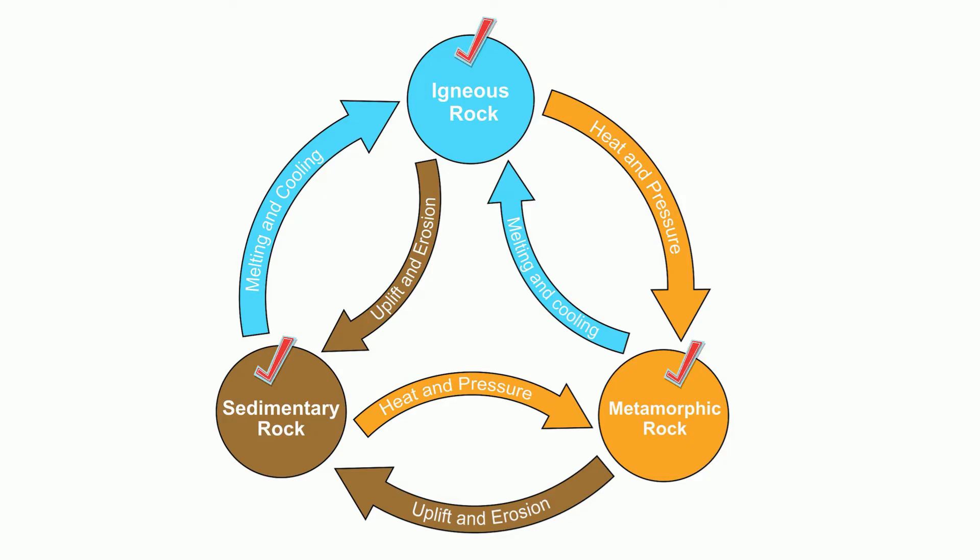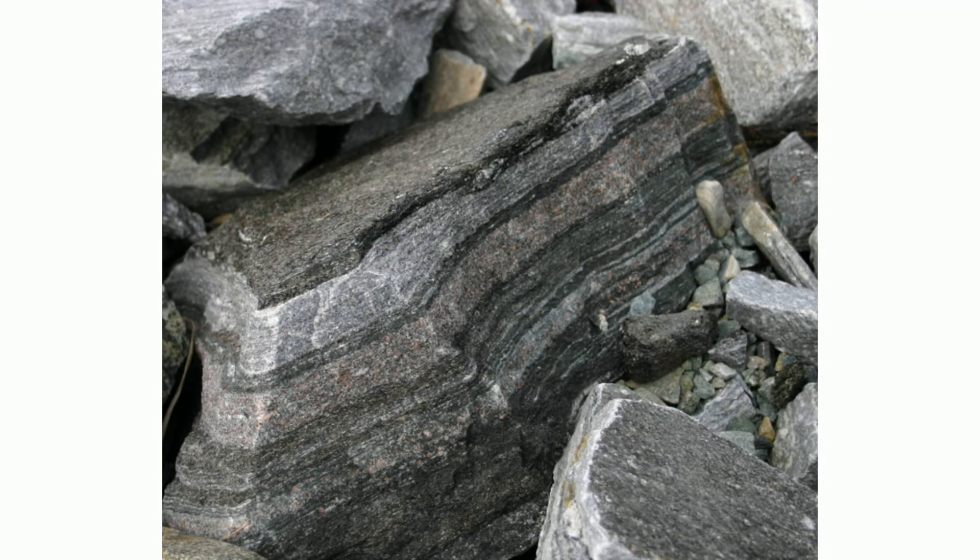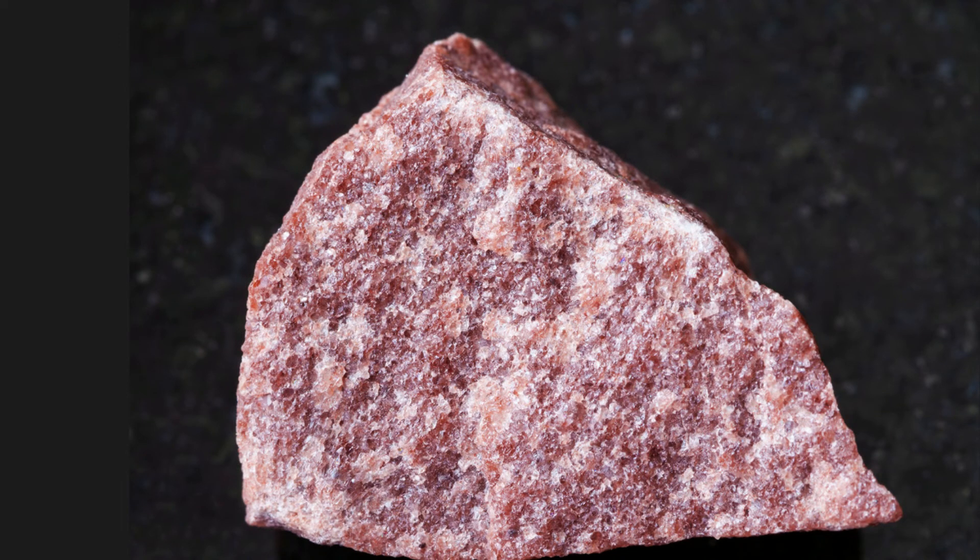There are two major types of metamorphic rocks. Foliated rocks, which have layered bands, and non-foliated rocks, which do not have these layers or bands.